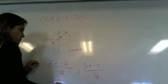Okay, so average of x is average of y's. So 2 plus a negative 2 divided by 2. Comma, 5 plus a negative 1 divided by 2. So that's going to give us 2 minus 2 is zero. So that's going to give us 4 over 2. 0, 2. So our center is equal to 0, 2.